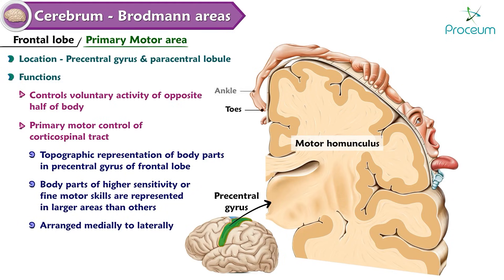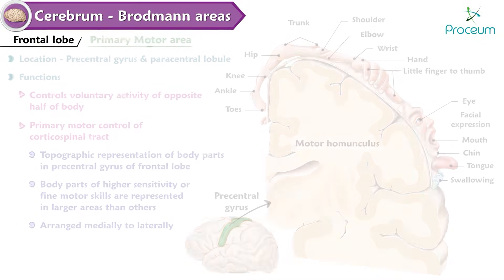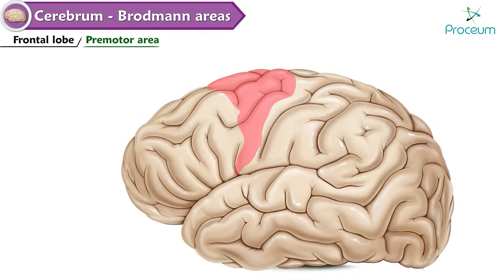Motor homunculus arrangement (medial to lateral): toes, ankle, knee, hip, trunk, shoulder, elbow, wrist, hand, little finger to thumb, eye, facial expression, mouth, chin, tongue, swallowing.